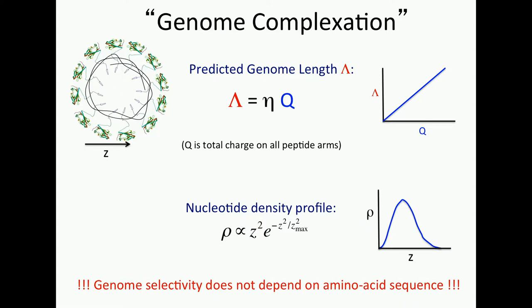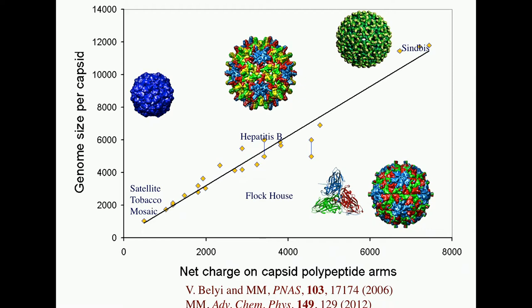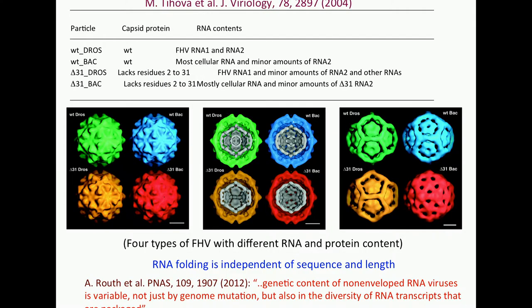These predictions have turned out to be good. Surprisingly, given this approximation, simple calculations, these are the data. These are not simulations. These are mother nature's data over billions of years. For all kinds of viruses they fall on this very nice master curve, exactly the way we predicted. Namely, lambda is proportional to total charge. Similarly, if you look at the density profile, they changed the sequences and the virus is the same. The whole process takes place independent of the sequence, following electroneutrality.